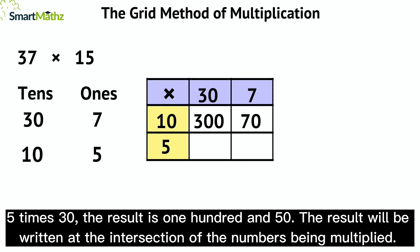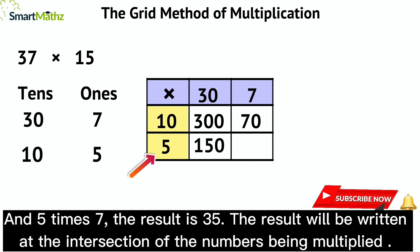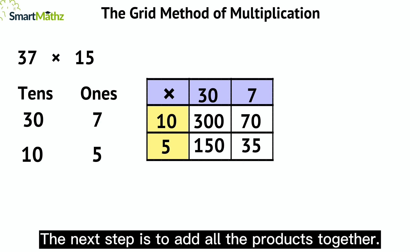The result will be written at the intersection of the numbers being multiplied. And 5 times 7—the result is 35. The result will be written at the intersection of the numbers being multiplied. The next step is to add all the products together.